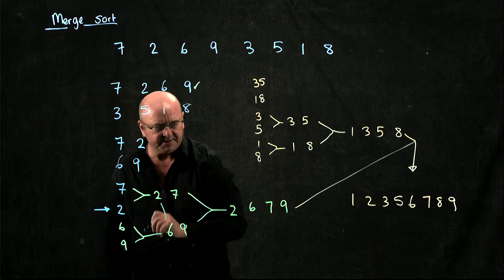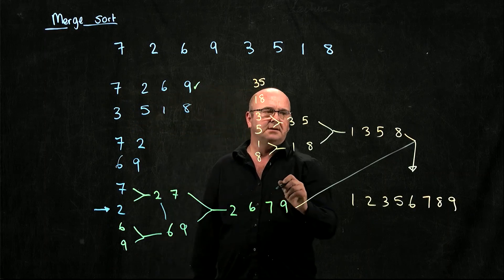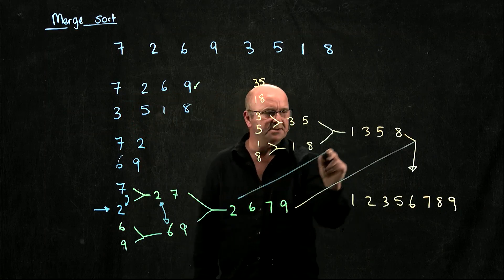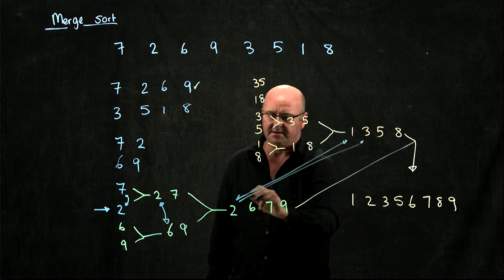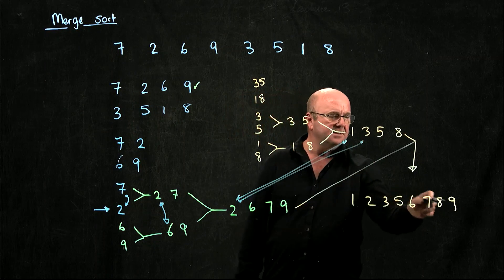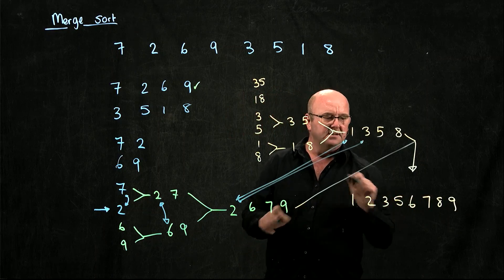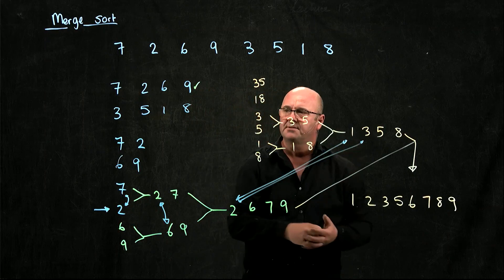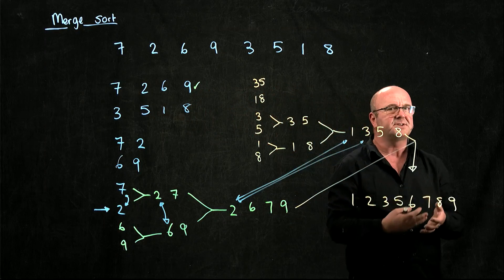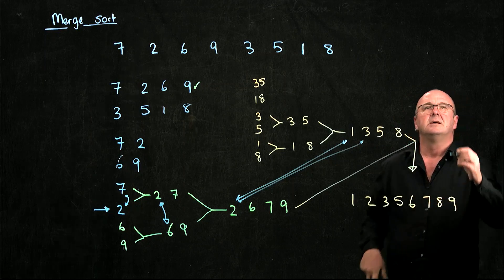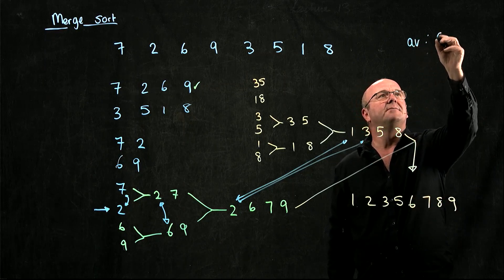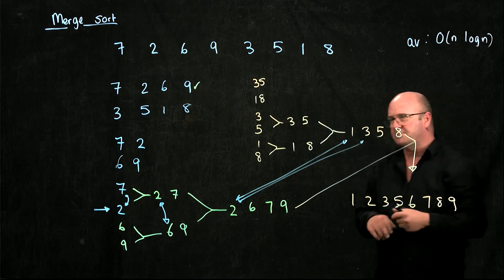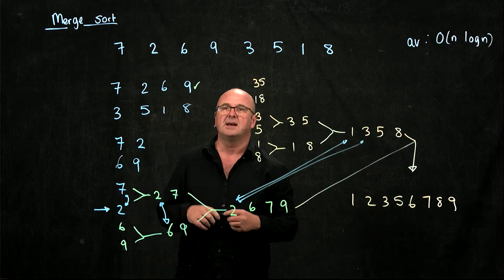We don't do any comparisons until we start merging things back together. And when we merge, I compare the two and the six, the two and the seven, the two and the six again, the one and the two, and the two and the three. I never compare the two to the nine, the eight, the seven, the six, or the five — only to the seven, six, one, and three. Because I'm dividing in half each time, I'm reducing the number of comparisons. So the average complexity for merge sort is n log n: there are n things to compare, and I only have to compare them to log n things.